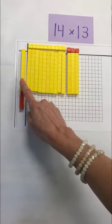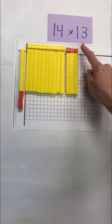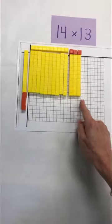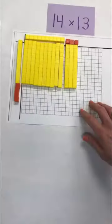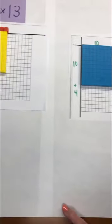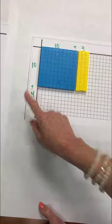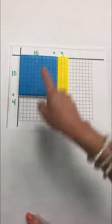So then we're going to say that 10 times 3 would give us our 30 or our three sets of 10. Alright so now let's transition to show this in a different way. So now I've written my factors 10 plus 4 and 10 plus 3.